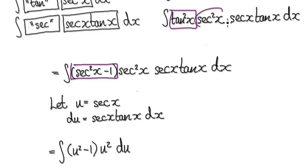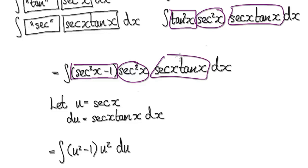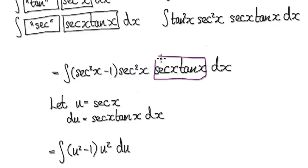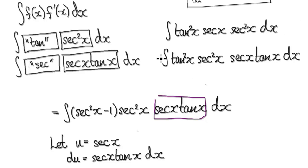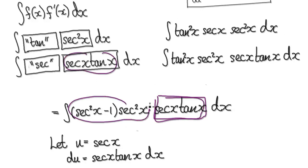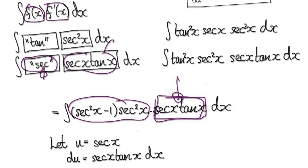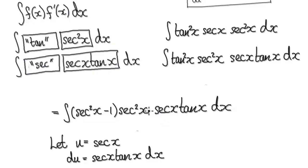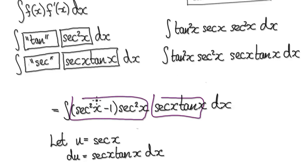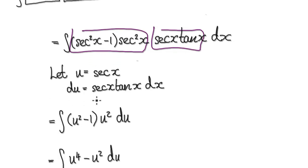So now we've got secant squared times secant squared, and this whole thing here is in the required form. This thing here is all in terms of secant — everything is in terms of secant. Because this is the exact derivative of this, we know we can use substitution. It will be really easy to integrate, because this is a derivative of everything in terms of secant.